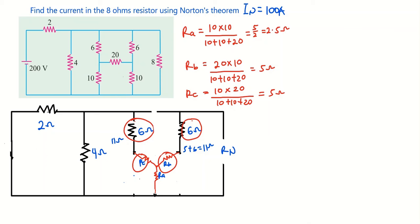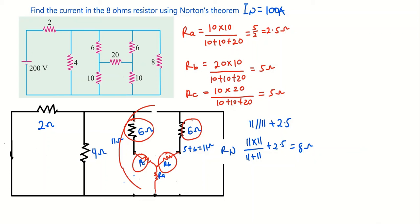The two 11-ohm combinations are in parallel with each other, and both are in series with Ra. So we get (11 × 11)/(11 + 11) + 2.5 = 5.5 + 2.5 = 8 ohms for this middle section.